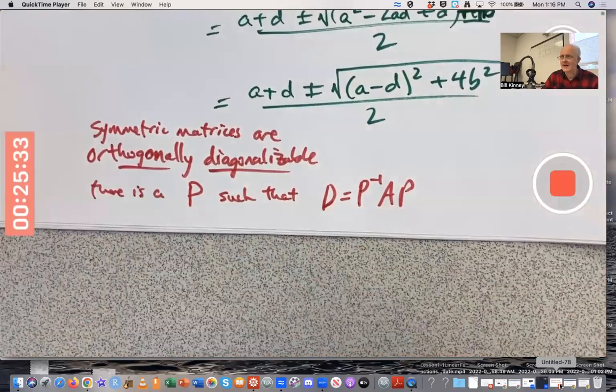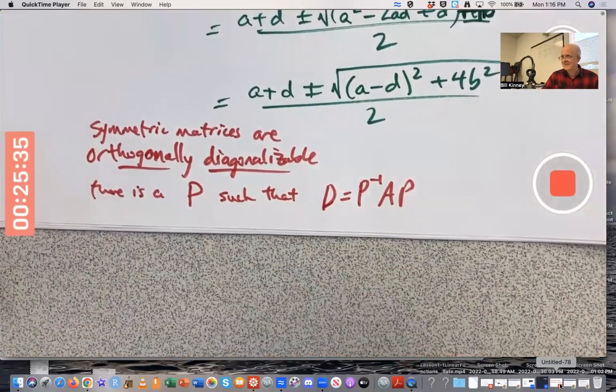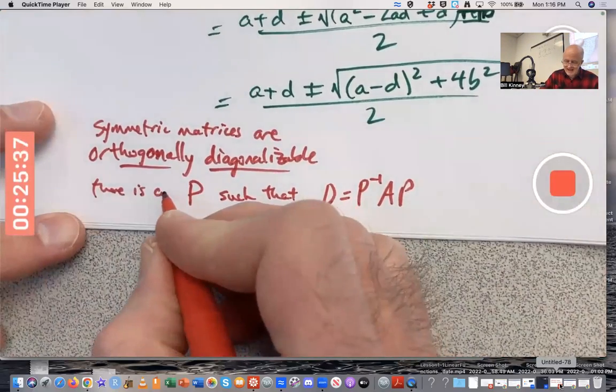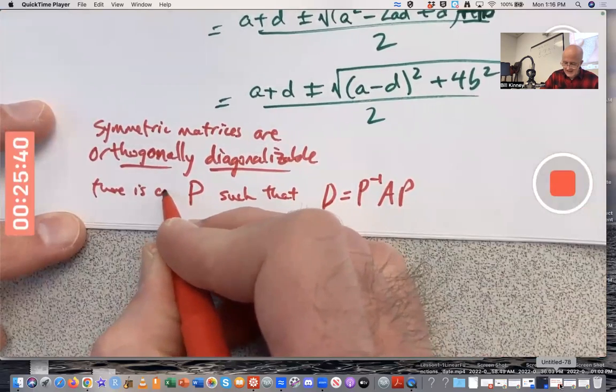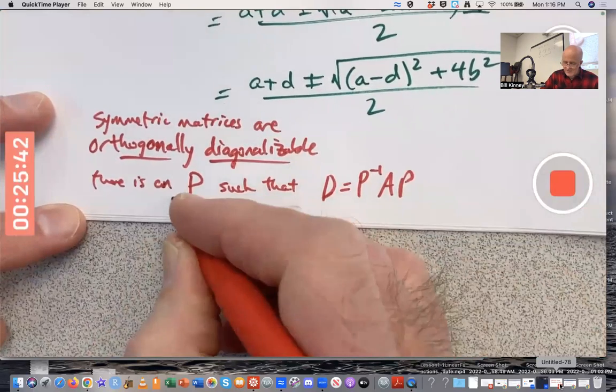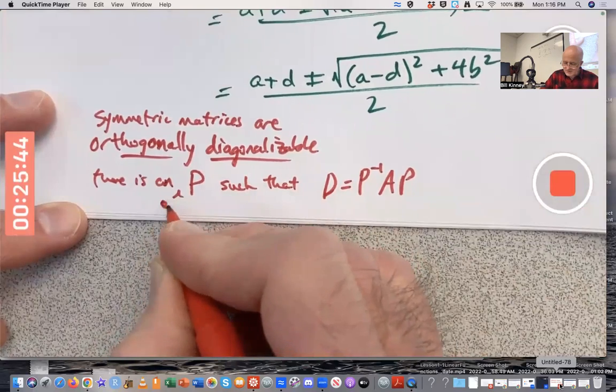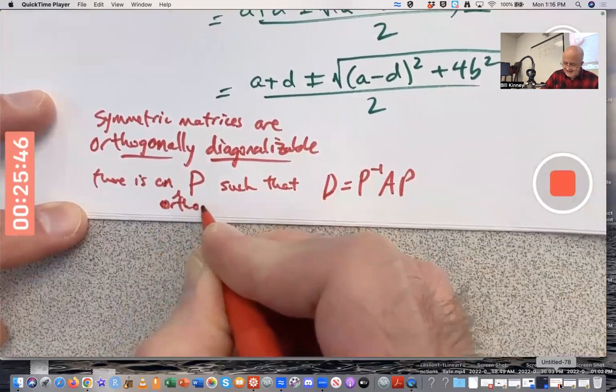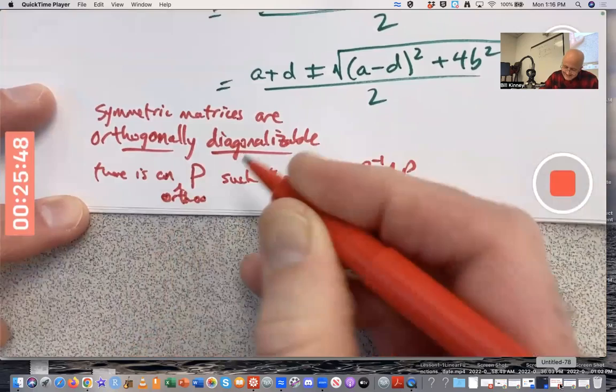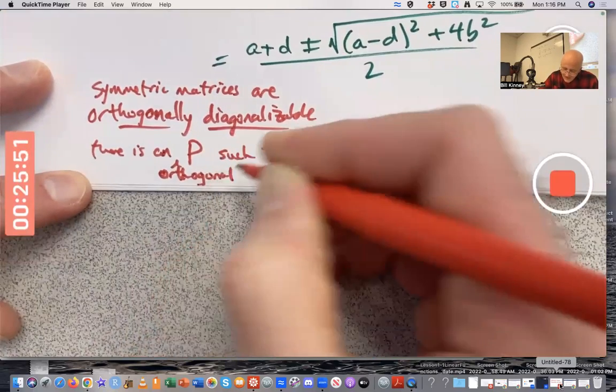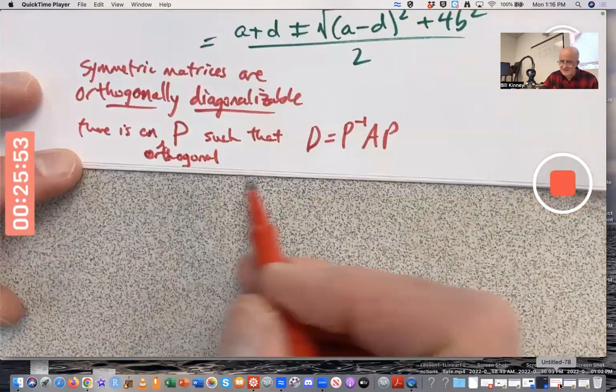But what about orthogonally diagonalizable? I'm going to add an extra word here and make the an an. There is an orthogonal matrix P, I'm trying to write orthogonal here. Orthogonal matrix P so that this is true.